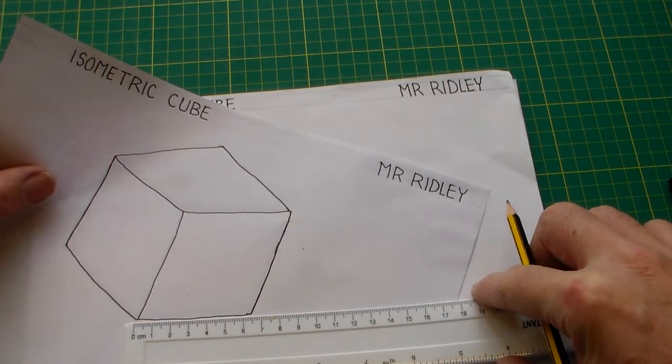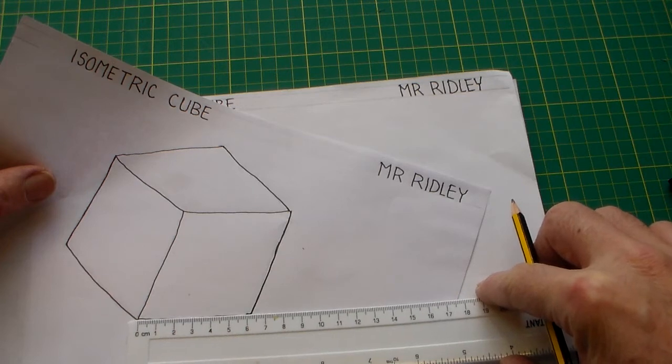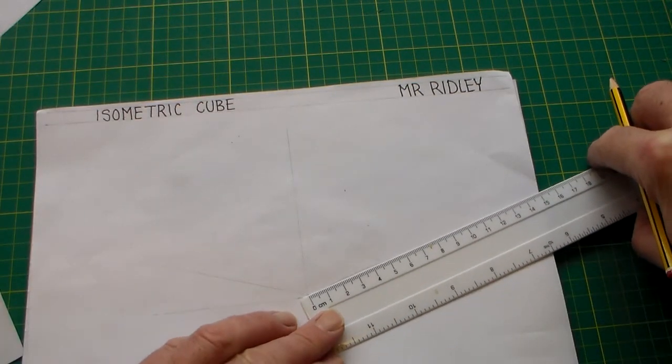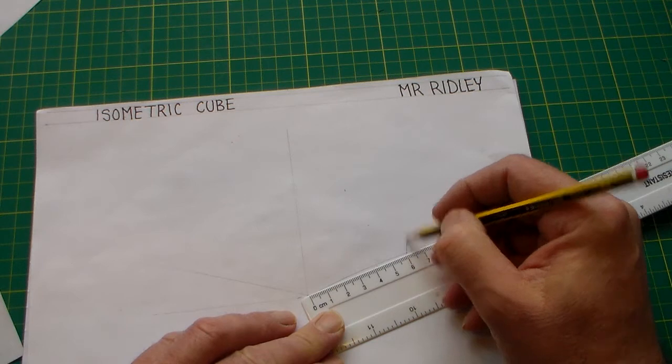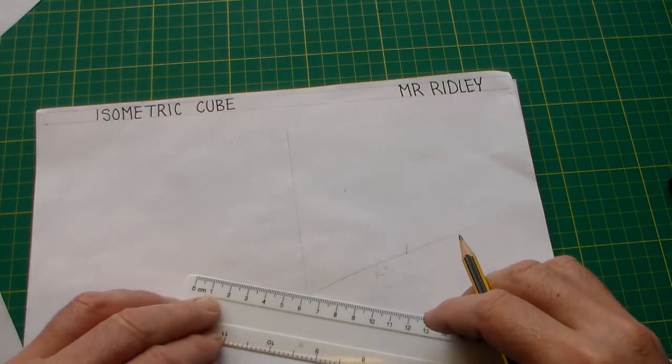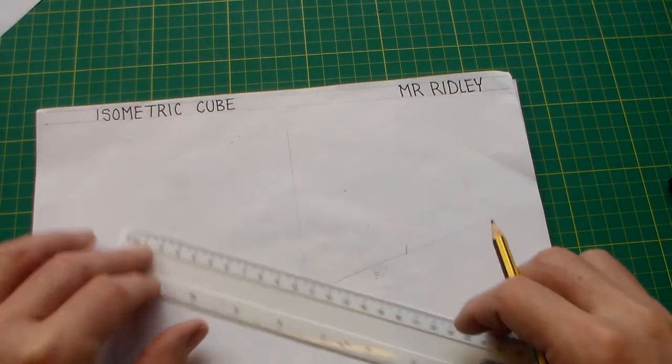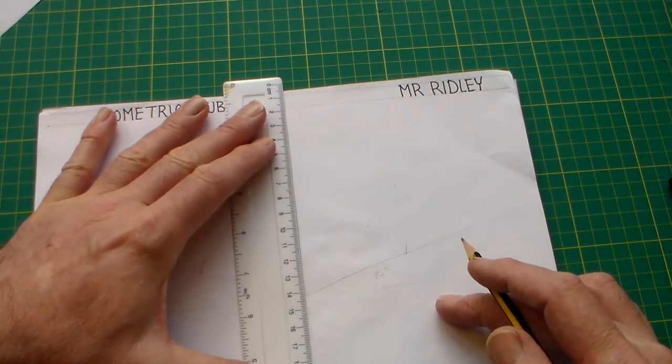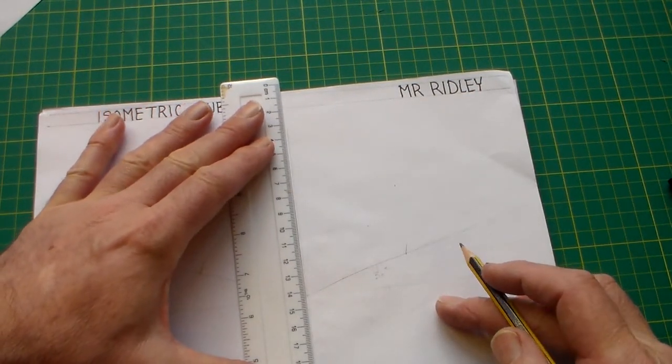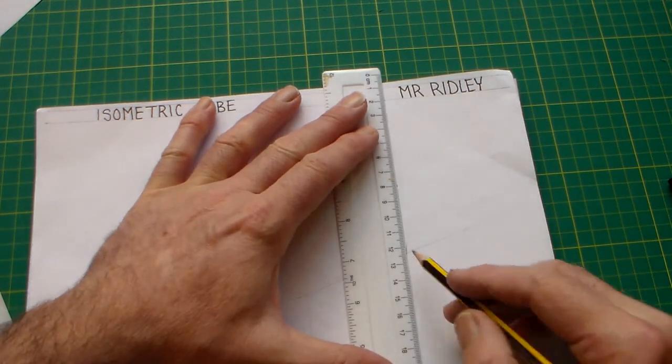Then we can pick a distance, so if we look at the distance here, we can say about six centimeters or 60 millimeters, and we can put a mark at 60 millimeters, and we can put a mark.